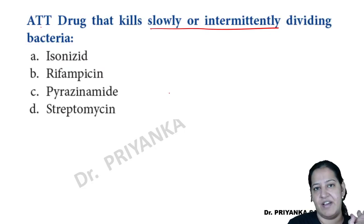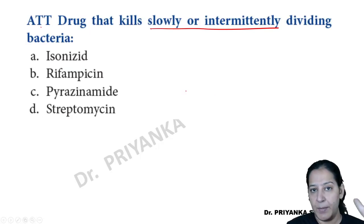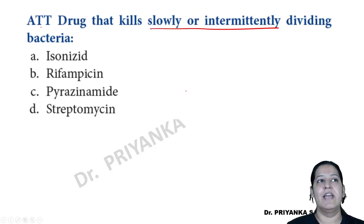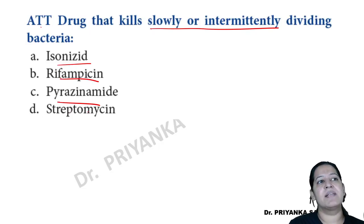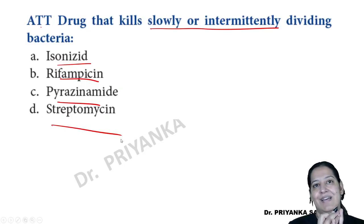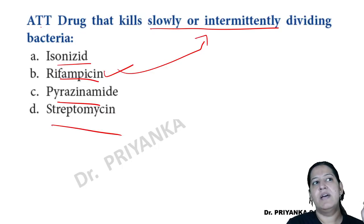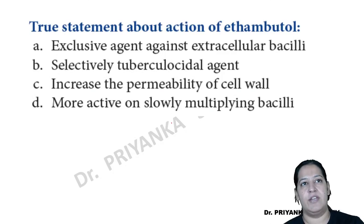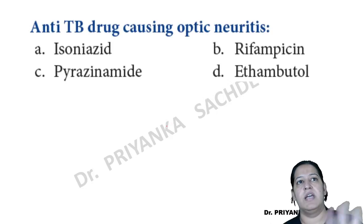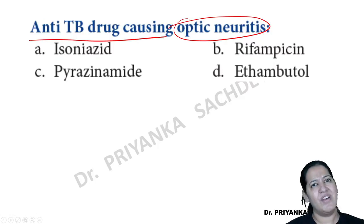Question 2: If a patient develops resistance to isoniazid, which other drug will simultaneously have resistance? In MDR-TB, resistance always occurs for two drugs — H plus R. The correct answer is rifamycin (reformycin). That is the definition of MDR.